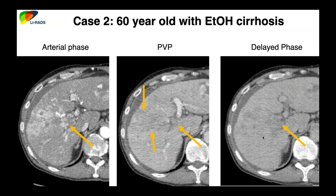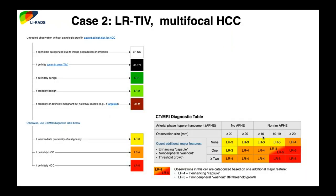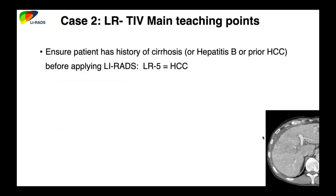Our second case is a 60-year-old man with ethanol-induced cirrhosis. On arterial phase there's a large enhancing area. On portal venous phase there is a sudden cutoff of the portal vein with washout throughout the previously enhancing area. On delayed images, the cutoff persists. This patient has not only an HCC but also tumor in vein — a finding discussed in detail by Dr. Furlan. These patients usually have a worse outcome and significantly narrowed management options.